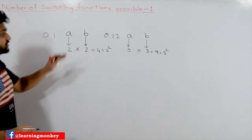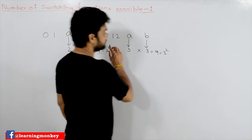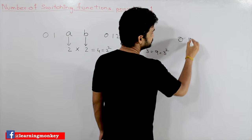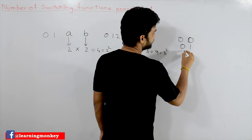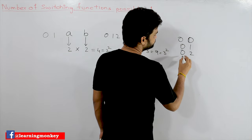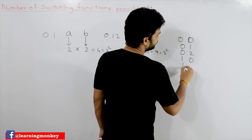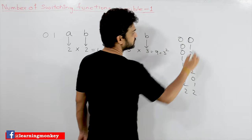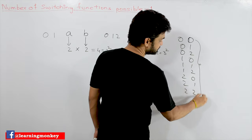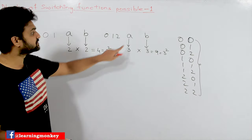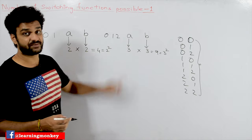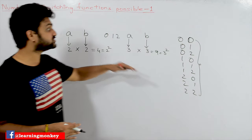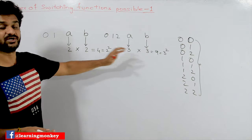So what are those combinations? With three values for each variable, it is: 0 0, 0 1, 0 2, 1 0, 1 1, 1 2, 2 0, 2 1, 2 2. These are the nine different combinations possible with two variables that are capable of storing three values.